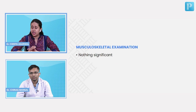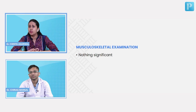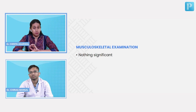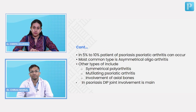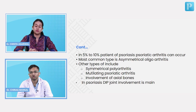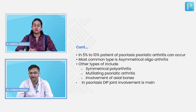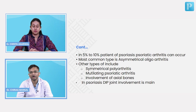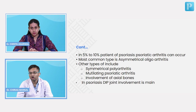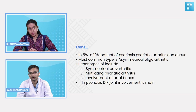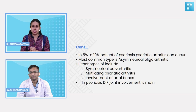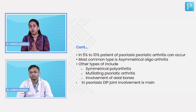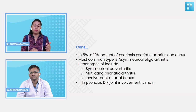Why are we doing musculoskeletal examination here, which we don't usually do for all dermatological cases? Because psoriasis can turn into a complication called psoriatic arthritis, which is usually asymmetrical oligoarthritis. To rule that out, musculoskeletal examination is done to check for any joint involvement. Around 5 to 10% of psoriatic patients ultimately develop psoriatic arthritis.